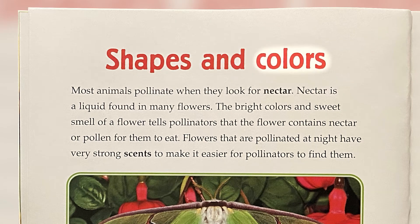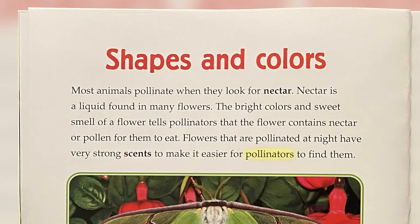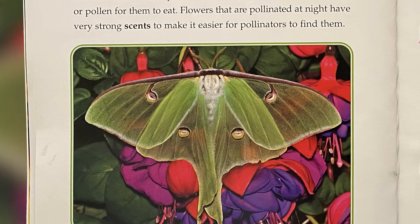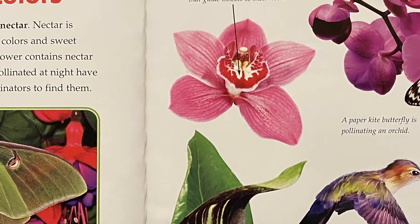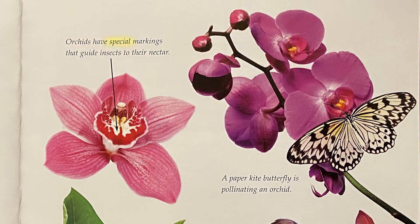Shapes and Colors: Most animals pollinate when they look for nectar. Nectar is a liquid found in many flowers. The bright colors and sweet smell of a flower tells pollinators that the flower contains nectar or pollen for them to eat. Flowers that are pollinated at night have very strong scents to make it easier for pollinators to find them. The luna moth is a beautiful night-time pollinator. Orchids have special markings that guide insects to their nectar — a paper kite butterfly is pollinating an orchid.